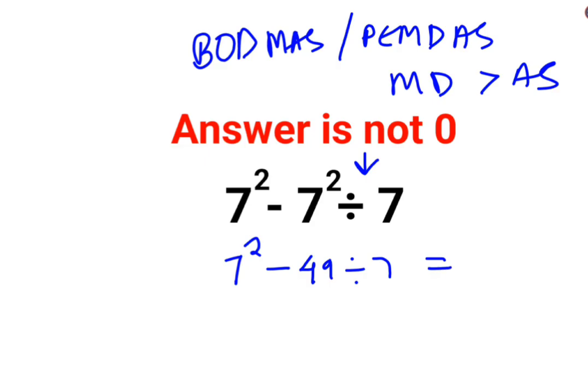So here, 7 square is what? 49 minus 49 divided by 7 is minus 7. So answer for this question is supposed to be 42.